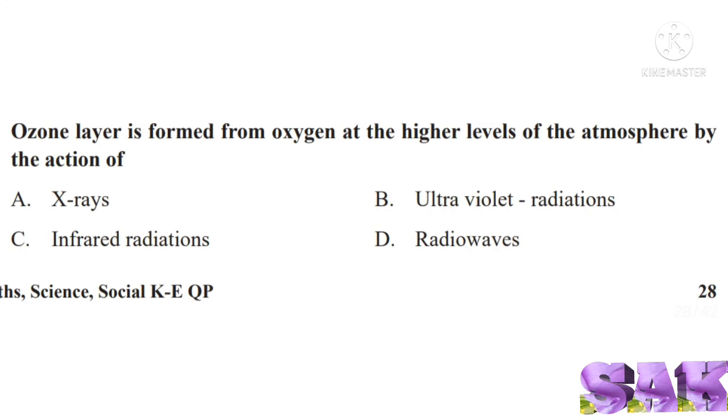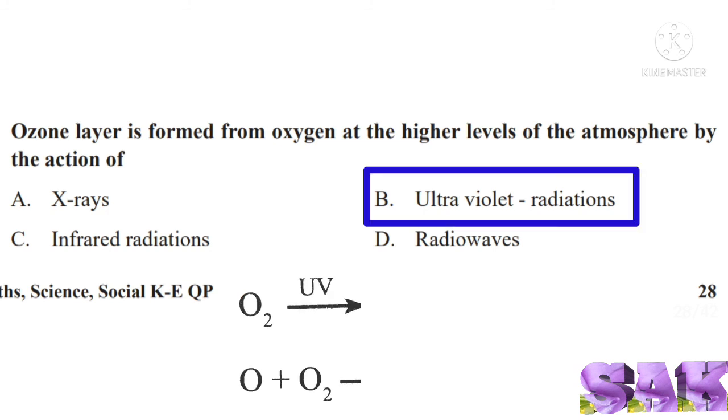Next question: ozone layer is formed from oxygen at the higher levels of the atmosphere by the action of. Correct answer for this question is option B, ultraviolet radiations.